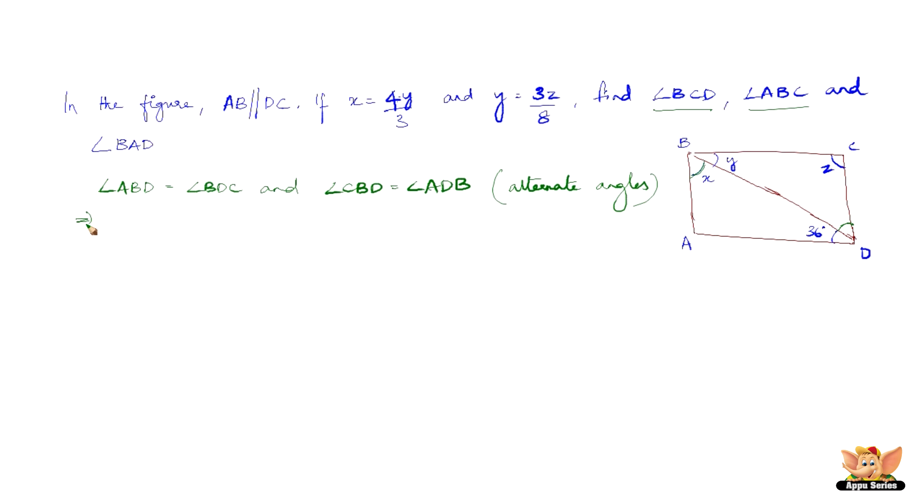Now, we have angle BDC equal to X and angle CBD equal to Y, because these two angles are equal. And we have Y equals 36 degrees. Y is 36 degrees because it is very clearly mentioned in the diagram that ADB equals 36, and Y is 36 because these two angles are alternate angles.